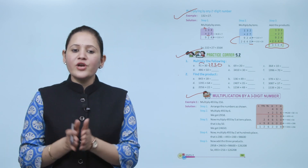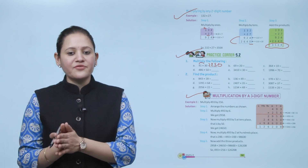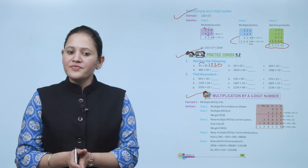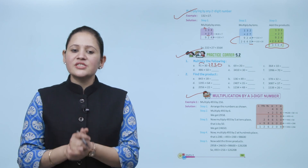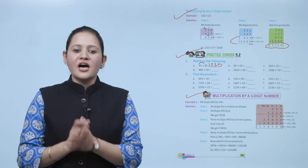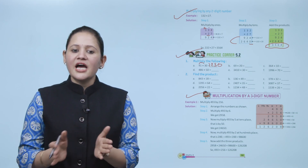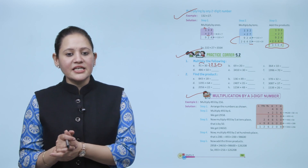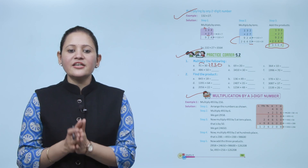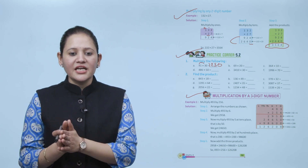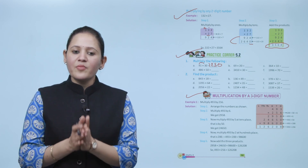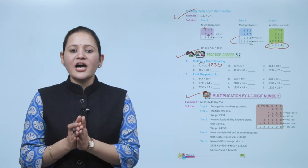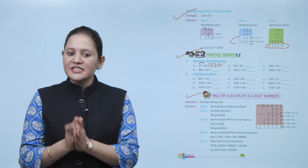Next is multiplication by a three-digit number. Multiply 493 by 256. The steps are: arrange the numbers as shown, then multiply 493 by 6 to get 2958. Next, multiply 493 by 5 at the tens place.